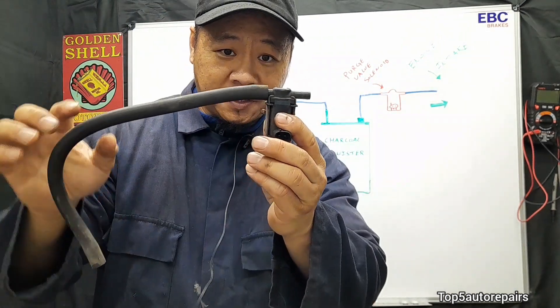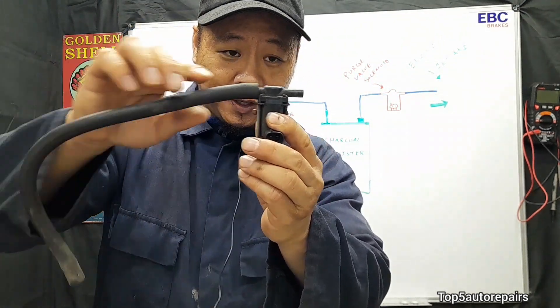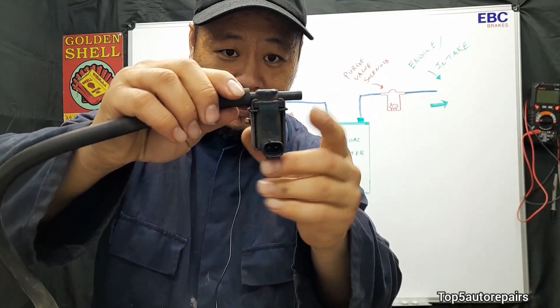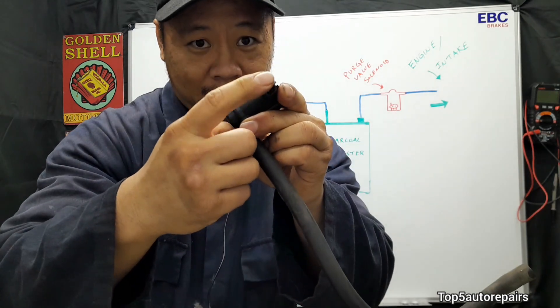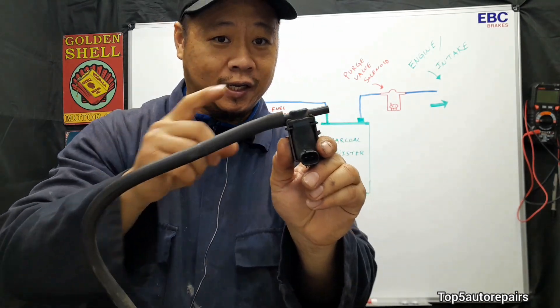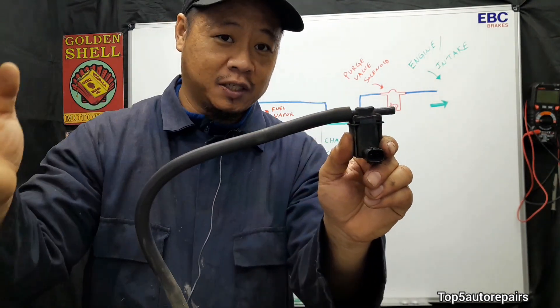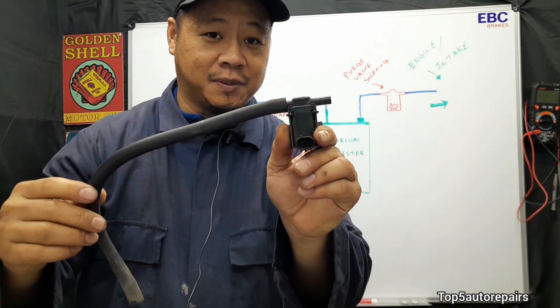If you look at the purge valve solenoid, you have this vacuum hose over here, one port over here and another port over here, and basically an electrical connection. I want to tell you exactly how this works and how it is part of the EVAP system and what it does in the EVAP system.